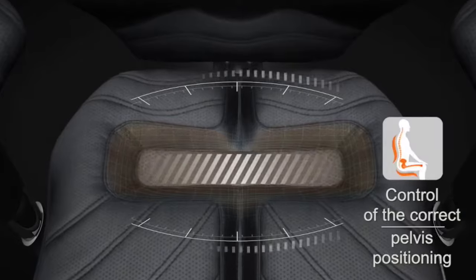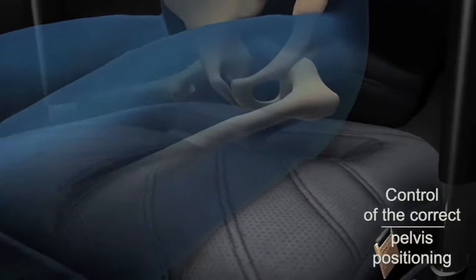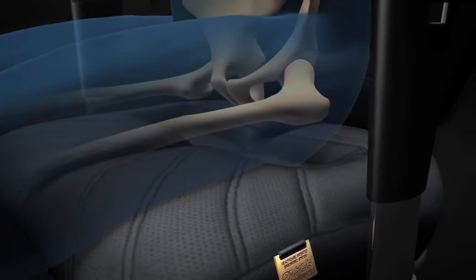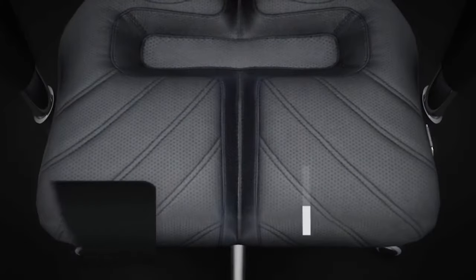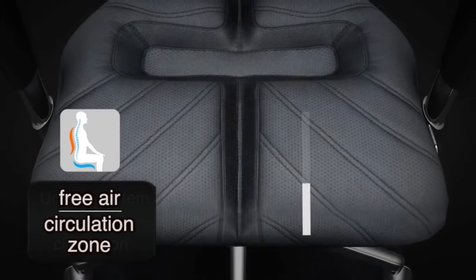The pelvis position zone improves blood circulation in the pelvic organs. The air circulation zone ensures free access of air flows and maintains a comfortable temperature, preventing overheating.